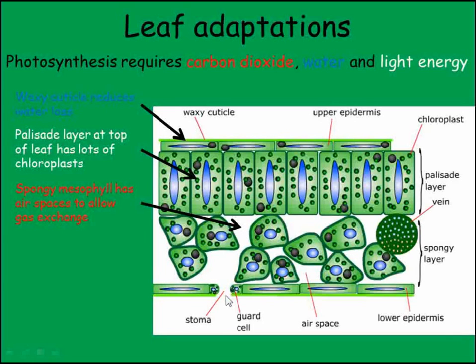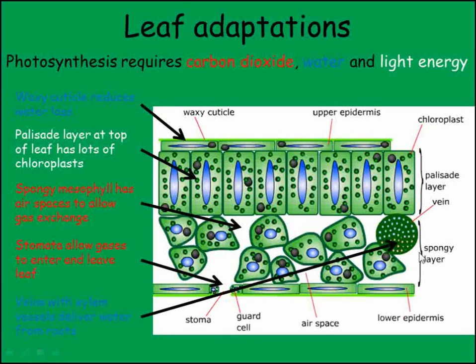The underside of the leaf is solid, except for holes called stomata. These open and close during the day, controlled by the guard cells around them, to allow carbon dioxide in and oxygen out. Through the leaf, there are veins containing xylem vessels that deliver water absorbed in the roots.